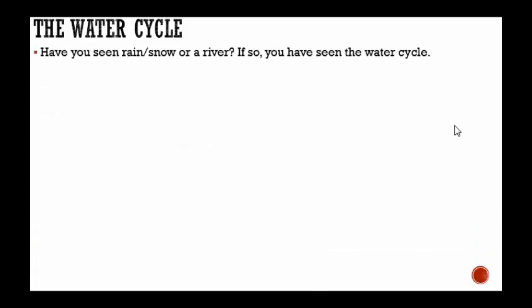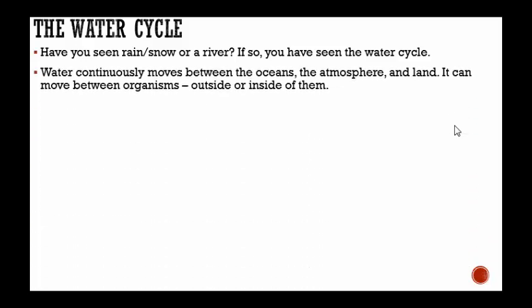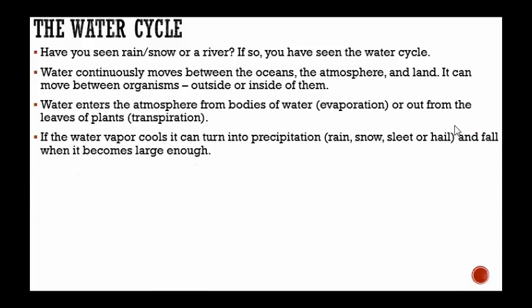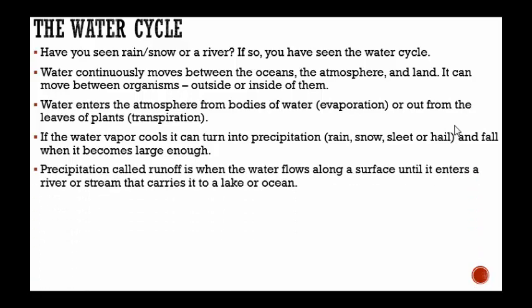Let's talk about the water cycle briefly. Water continuously moves between the oceans, the atmosphere, and land. It can move between organisms, outside or inside of them. Water enters the atmosphere from bodies of water — we call this evaporation — or out from the leaves of plants, which we call transpiration. If the water vapor cools, it can turn into precipitation: rain, snow, sleet, or hail, and fall when it becomes large enough. Precipitation called runoff is when the water flows along the surface until it enters a river or stream that carries it to a lake or ocean.